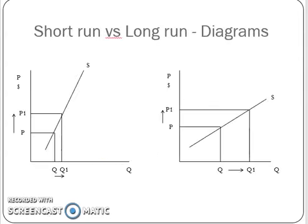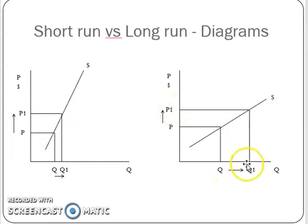If we look at the graph, we can see that a price increase has led to a more than proportionate increase in the quantity supplied. This is shown by our supply curve being horizontal, as you can see, and shows an elastic supply.